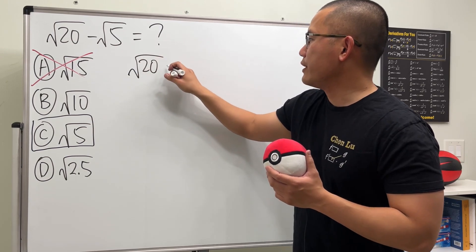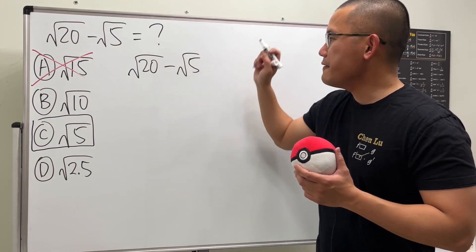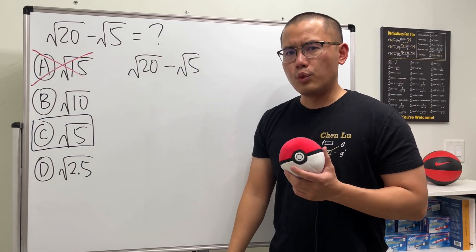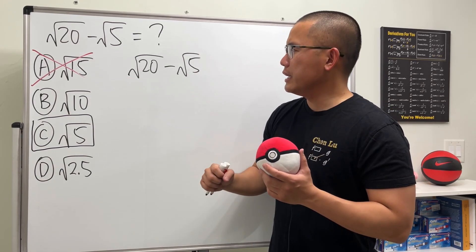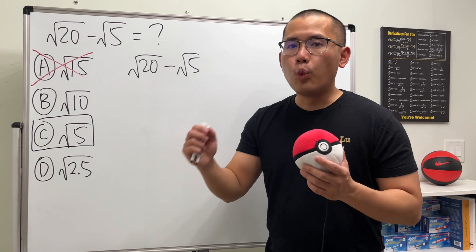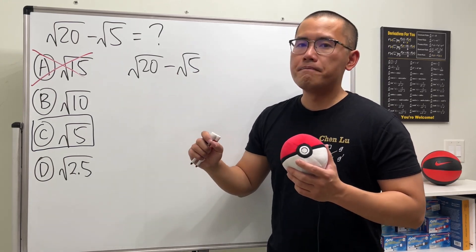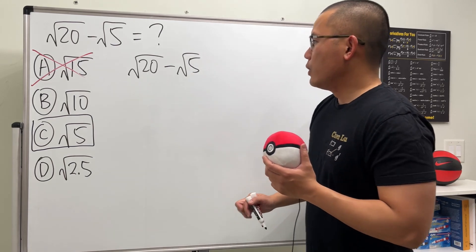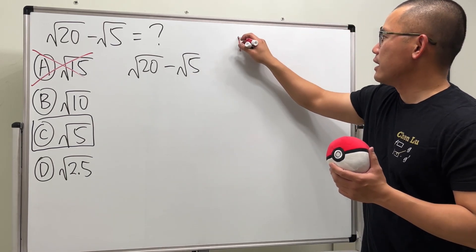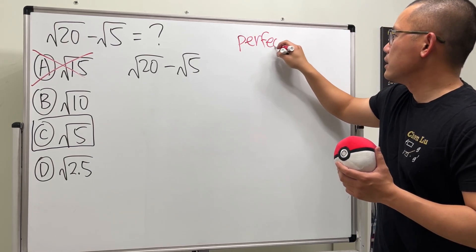Let me write this down again. Square root of 20 minus square root of 5. Well, the first thing that we will have to do is break down the square root. And the way to do it is we have to ask ourselves what times 4 will give us 20? And one of them has to be a perfect square. Well, by perfect square, we mean the following. Let me write it down on the side for you guys. Perfect Squares.